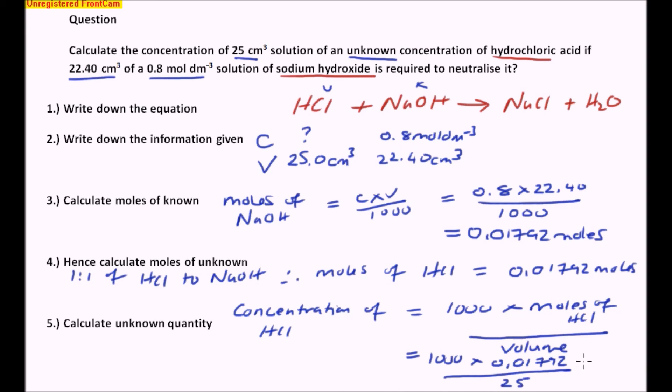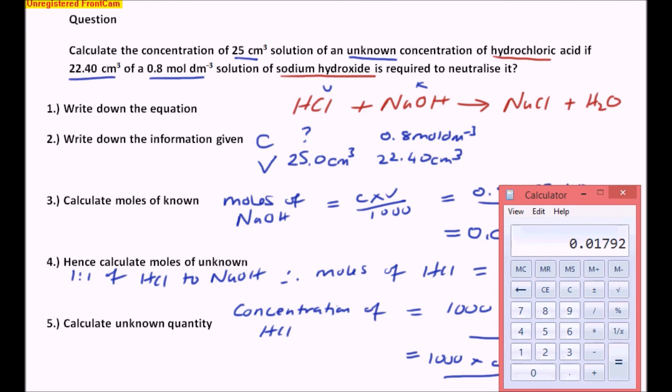If I then put that into the calculator, as I'll show you now, so it goes into the calculator, 0.01792 times by 1,000, divided by 25, and I get 0.7168,